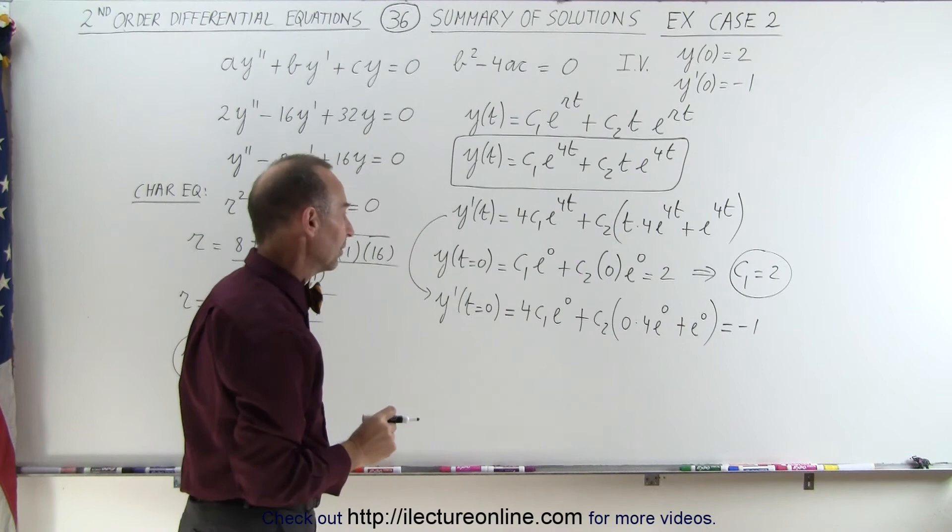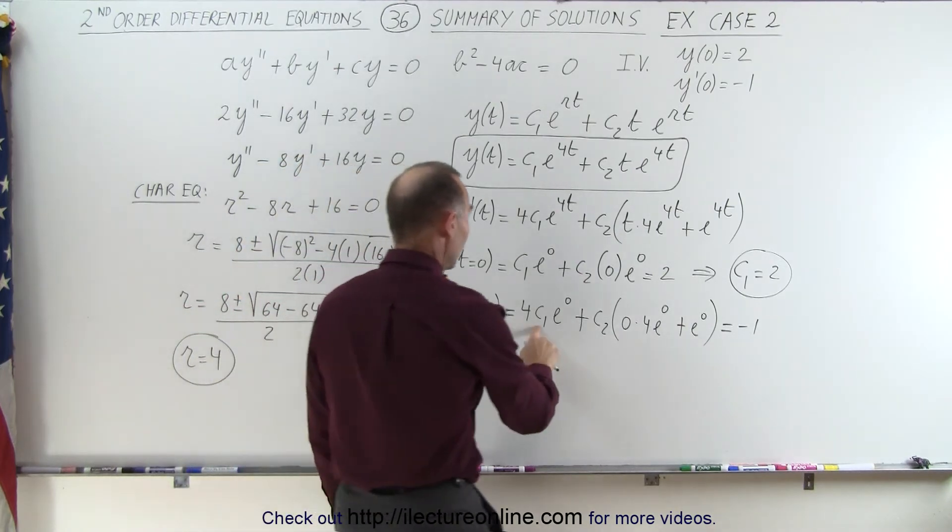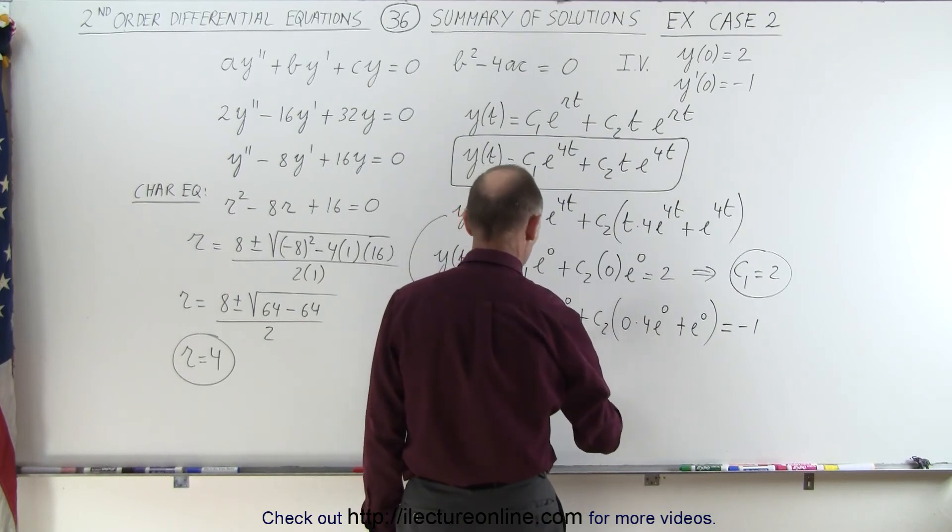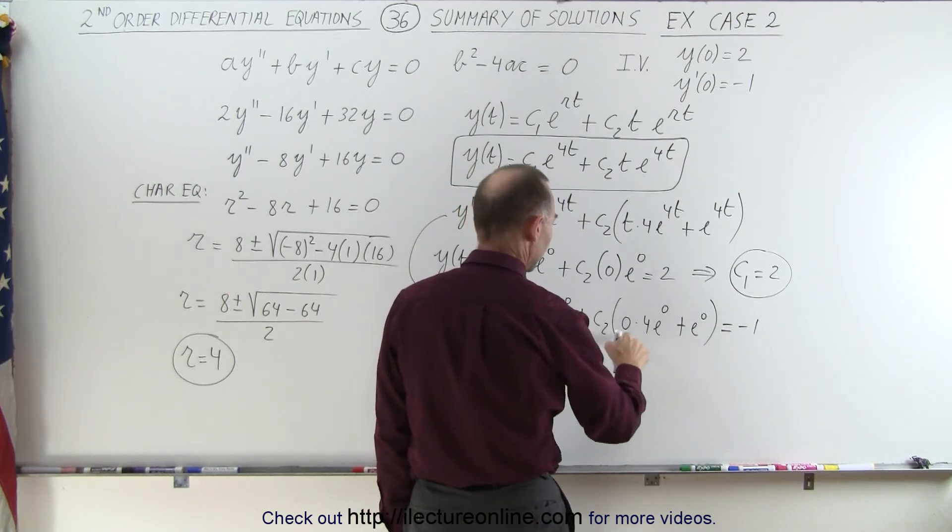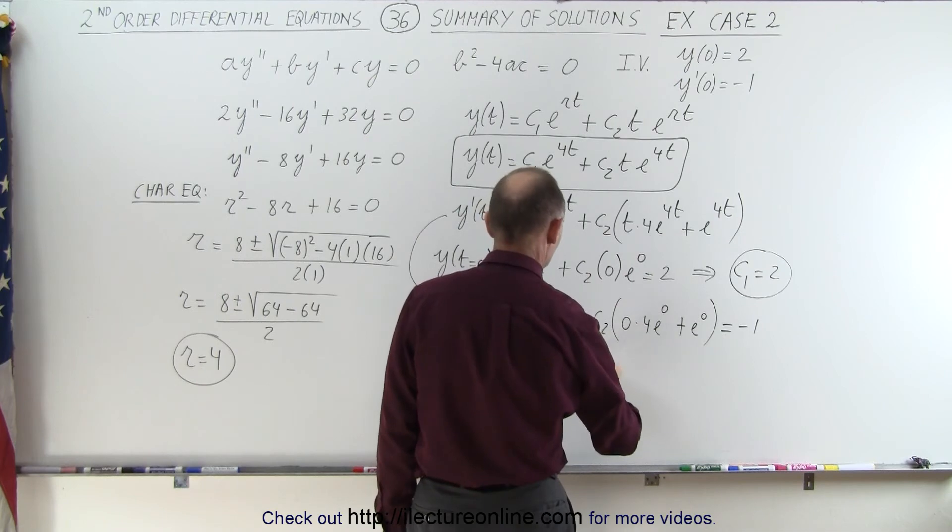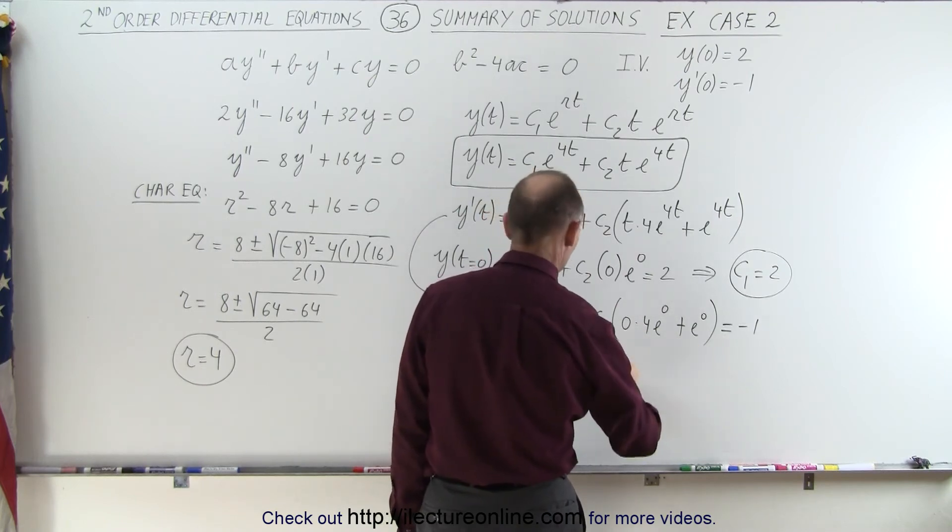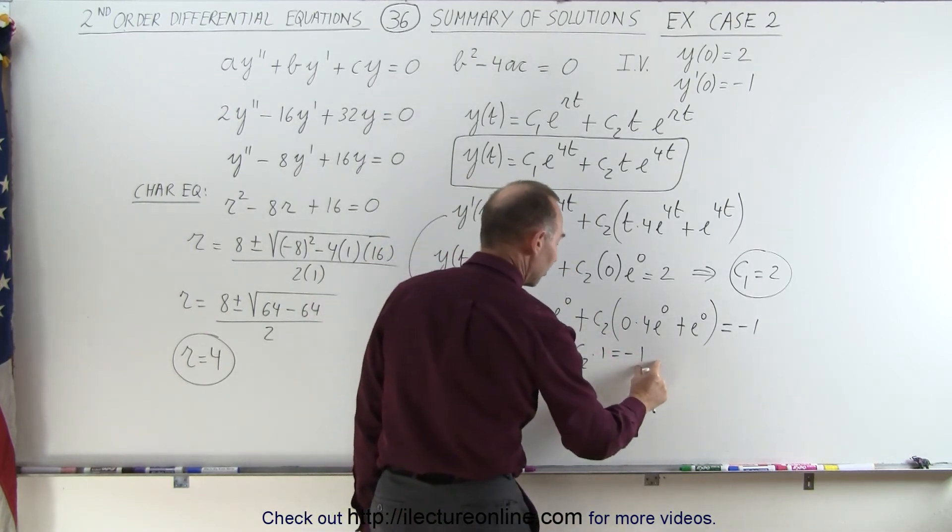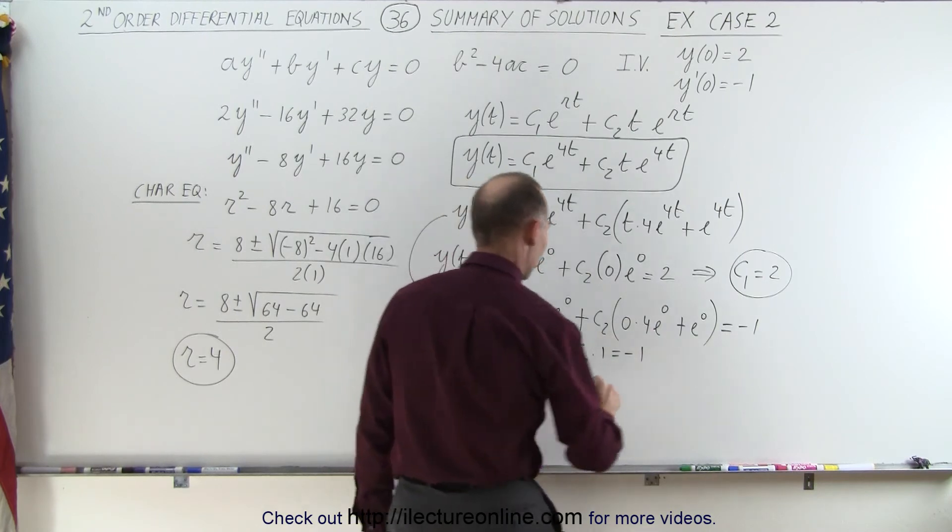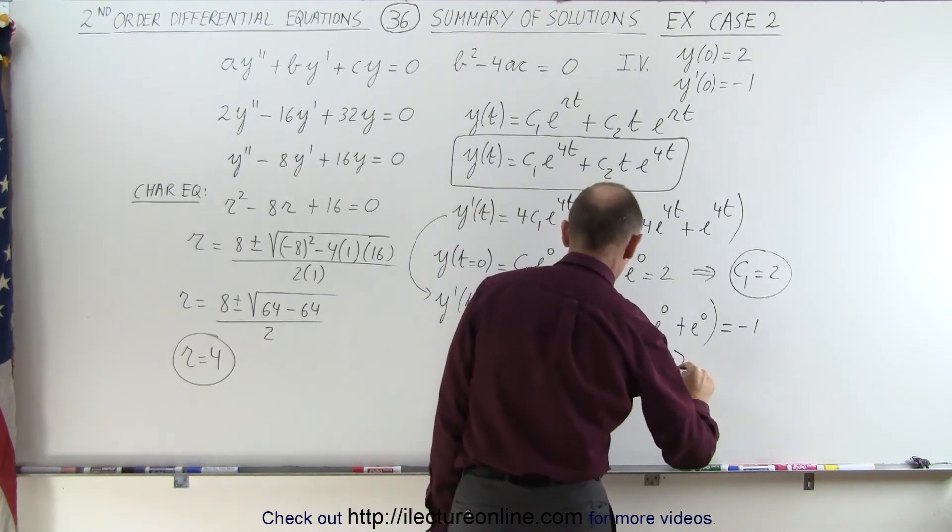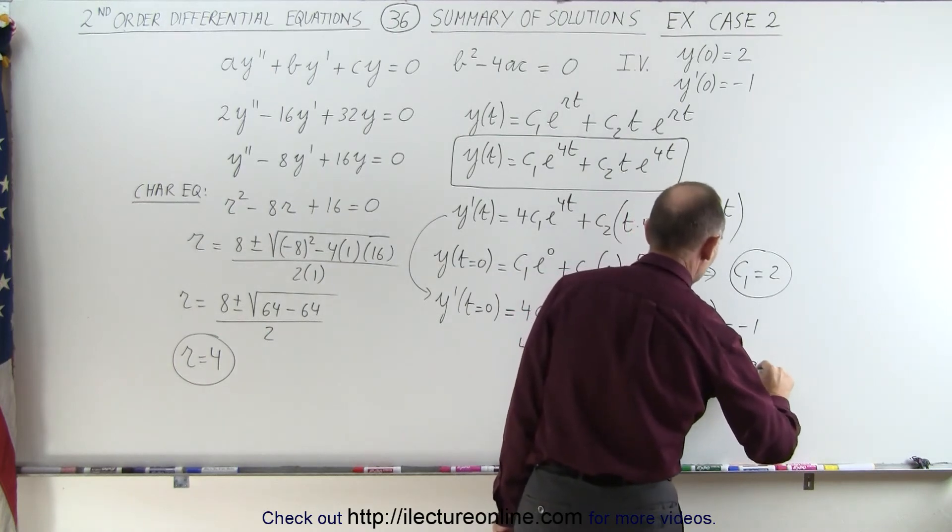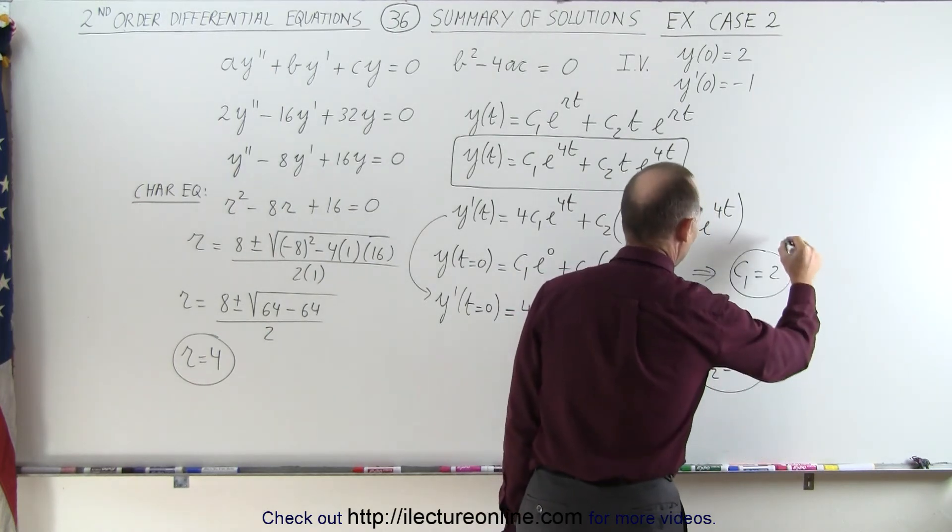All right, now let's substitute everything that we know. So c1 is equal to 2, so we have 4 times 2 plus, this is 0, and we have c2 times e to the 0, which is 1, times 1, and that equals negative 1. So we have 8 on the left side, when we move to the other side we get minus 8, so that means that c2 is equal to minus 8 minus 1 or minus 9. So now we have c1, we have c2, we're now ready to write the final exact solution to the differential equation.